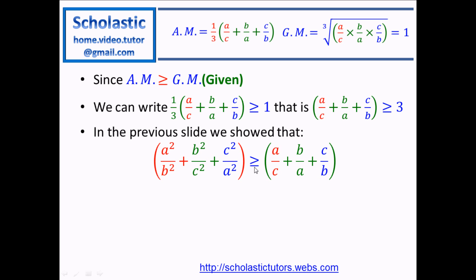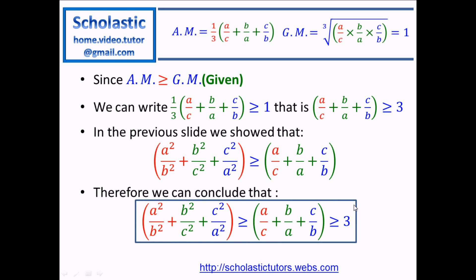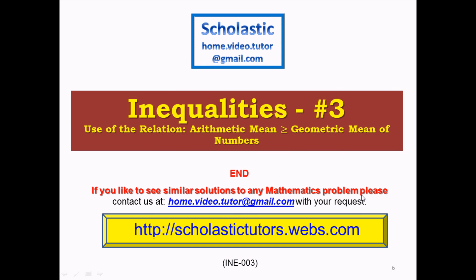So previously we showed that A squared over B squared plus B squared over C squared plus C squared over A squared is greater than or equal to A over C plus B over A plus C over B. And here we showed that A over C plus B over A plus C over B is greater than or equal to 3. Therefore, we can conclude: A squared over B squared plus B squared over C squared plus C squared over A squared is greater than or equal to A over C plus B over A plus C over B, which is greater than or equal to 3. End of solution. Thank you.